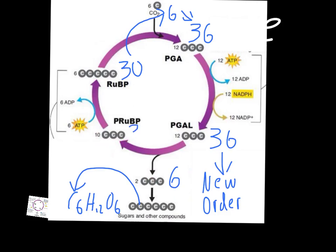The difference between pre-RUBP and RUBP is the same problem we had between PGA and PGAL. They both have thirty total carbons, but they're just in the wrong order. This one is ten groups of three to give us thirty, but it actually has to be in six groups of five. So again, energy is used to rearrange those. Some of the ATP molecules made during the light-dependent reactions are used to rearrange those ten groups of three into six groups of five. We get back to RUBP, and the whole cycle can start again.